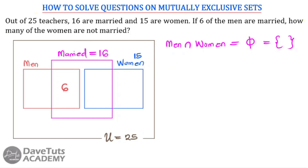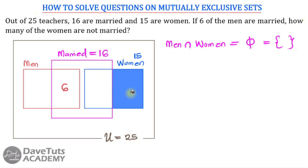What we are being asked is the women who are not married. Looking at the diagram, here is the section for women who are married, and here is the section for women who are not married — that is our region of interest. We are going to work it out directly and get the solution without needing to write out full set notation.